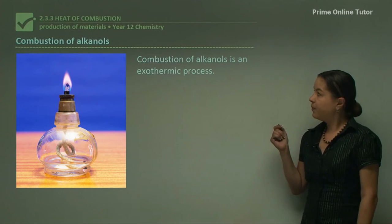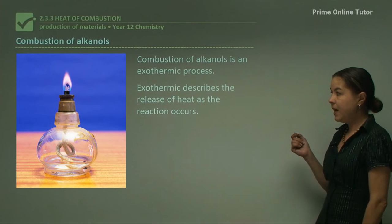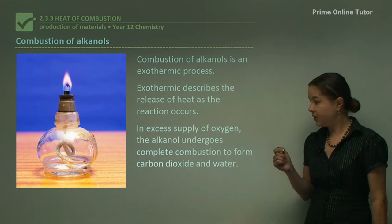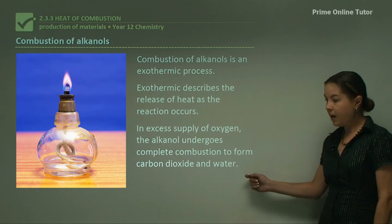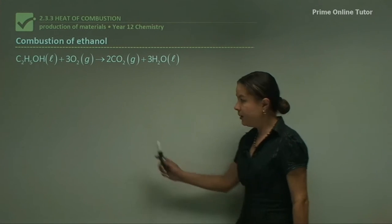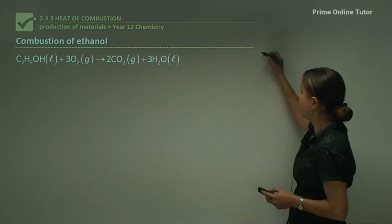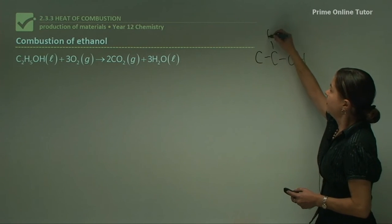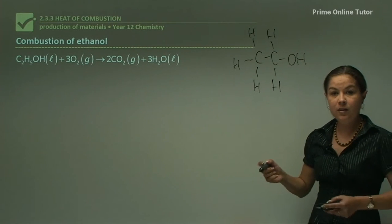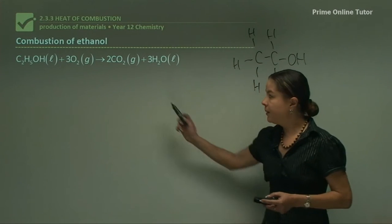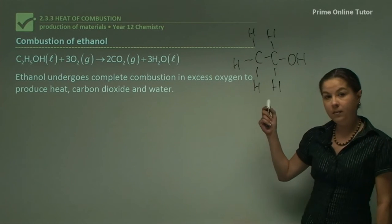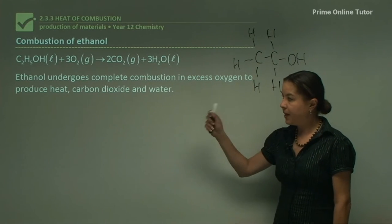The combustion of alkanols is an exothermic process, which means they release heat as the reaction occurs. In an excess supply of oxygen, the alkanol will undergo complete combustion to form carbon dioxide and water. This is the reaction for the combustion of ethanol — its formula is C₂H₅OH — and when reacted with three oxygen molecules it produces carbon dioxide and water. That's a complete combustion reaction, producing heat, carbon dioxide, and water.